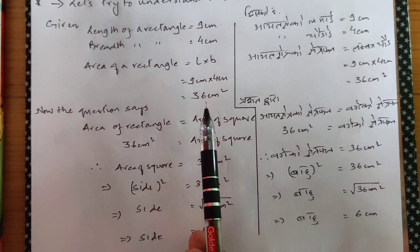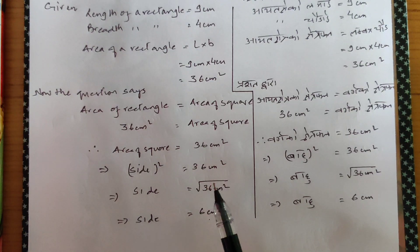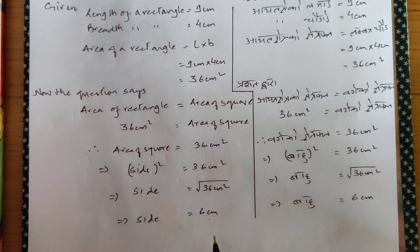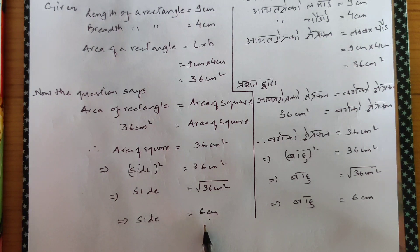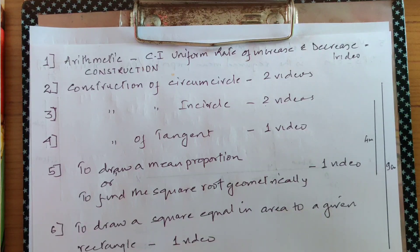So what I'm showing you is: the length and breadth of the rectangle are given, the area is 36 centimeter square, and the square you will draw will have a side of 6 centimeters. This is just to check yourself whether you will get your construction correct or not. Now let's begin the construction.